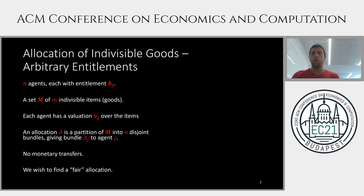In this talk, we are going to consider the problem of fair division of indivisible goods among agents with arbitrary entitlements. In our setting, we have n agents, each with an entitlement bj, and a set of m items. We want to allocate the items to the agents, where an allocation is a partition of the items into n disjoint bundles. We assume settings without monetary transfers.